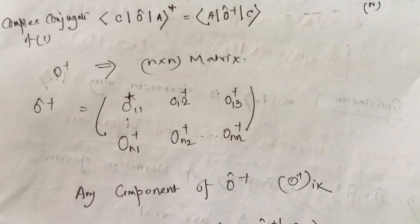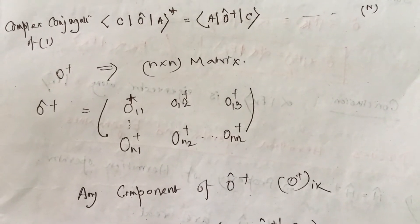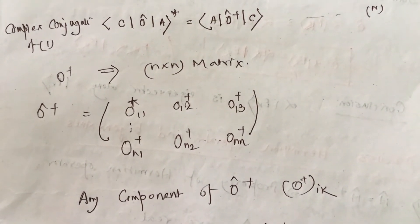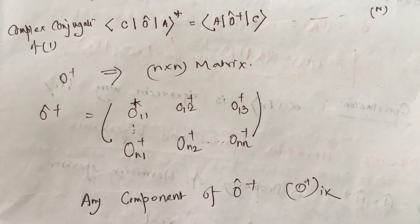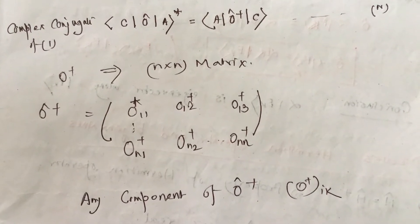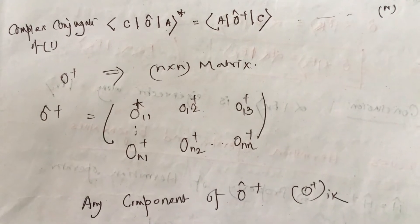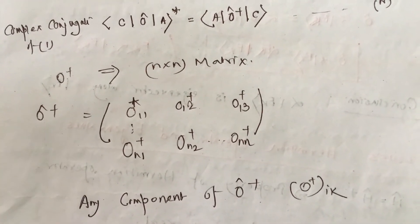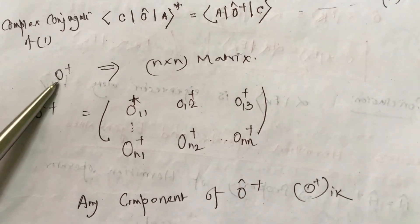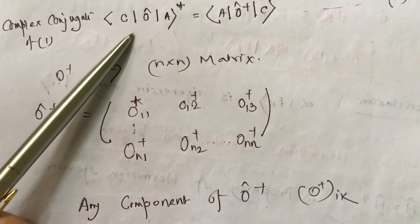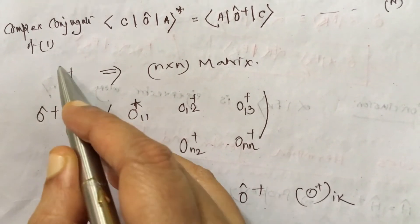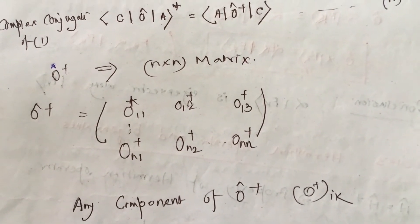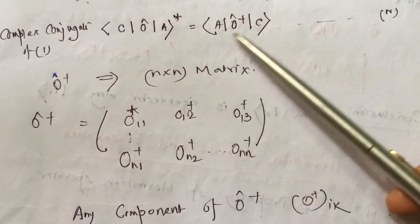We have already learned that O is an N×N matrix, which means it has N² elements. Any element of that matrix can be written as O_IK, where I is the row number and K is the column number. Hermitian conjugation means this operator will give real eigenvalues. The Hermitian conjugate O dagger is also an N×N matrix.